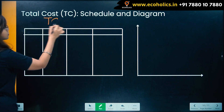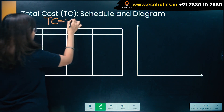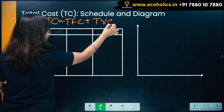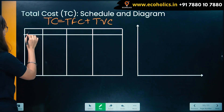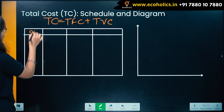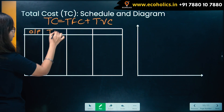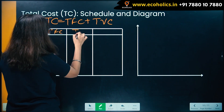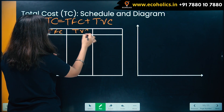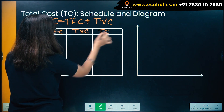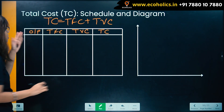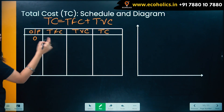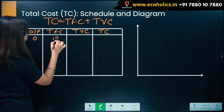Now let's draw the total cost schedule and diagram. Total cost is total fixed cost plus total variable cost. We'll take output, total fixed cost — which is going to remain constant — and total variable cost. When output is zero, total cost returns only to total fixed cost, which is 12.